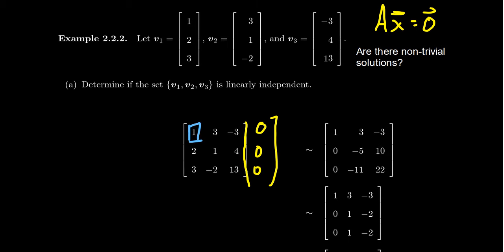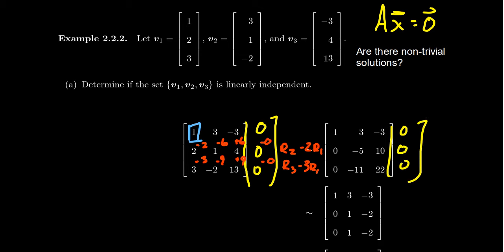Looking at the (1,1) position, there's already a 1 there. To eliminate the 2 below it, we take row 2 minus 2 times row 1. To eliminate the 3 below, we take row 3 minus 3 times row 1. This gives us: row 2 becomes (0, -5, 10, 0) and row 3 becomes (0, -11, 22, 0). Notice that the augmented column of zeros didn't change when we performed these row operations.